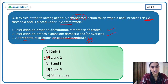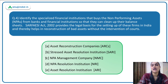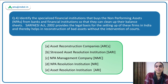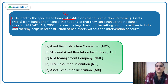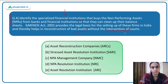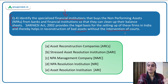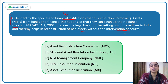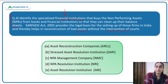Moving to the last question and next topic: Identify the specialized financial institutions that buy NPAs from banks and financial institutions so they can clean up their balance sheet. The SARFAESI Act provides the legal basis for these institutions, which help in reconstruction of bad assets without court intervention. The answer is Asset Reconstruction Companies — ARCs — option A.